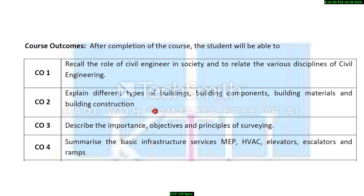Course outcome two is about explaining different types of buildings, building components, building materials, and building construction. Making a building is one of the very basic works of a civil engineer. Students will learn about various types of buildings such as residential, business, and institutional buildings, as well as the various components of a building above and below the earth.